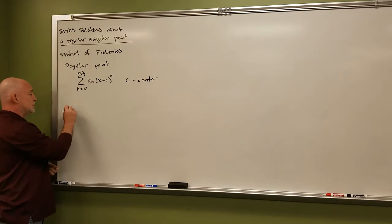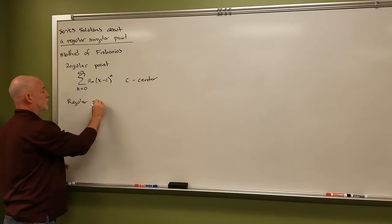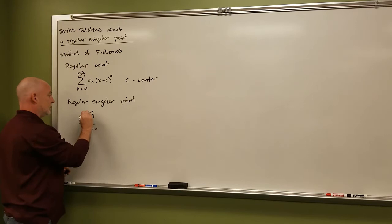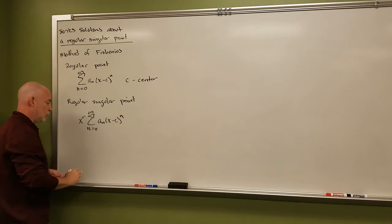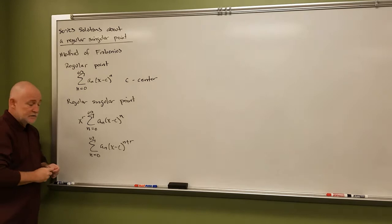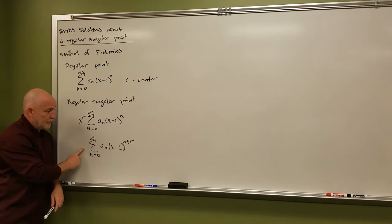So Frobenius said for a regular singular point, all we're going to do is take this power series and multiply it by a power of x. So we get the sum from n=0 to infinity of a_n·(x−c)^(n+r). This is the form of our solution — this is our guess.